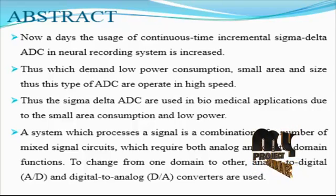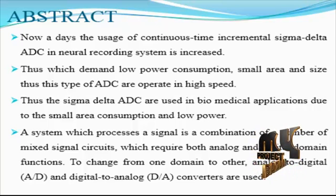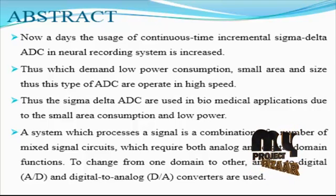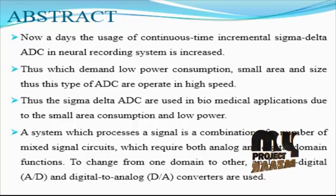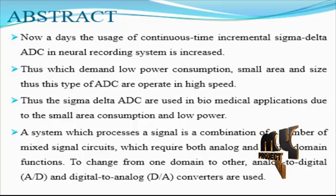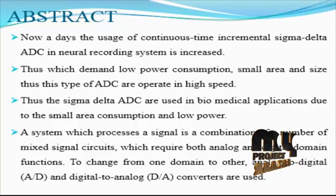A novel two-split capacitor array structure for successive approximation register analog-to-digital converter is proposed. When used for digital-to-analog conversion, the circuit reduces chip area and power consumption compared to conventional capacitor arrays, improving resolution. The area reduction becomes more significant with increasing ADC resolution. Capacitor mismatch and parasitic effects on the proposed structure are analyzed theoretically, and behavioral simulations demonstrate the effectiveness, showing good binary weighted elements for the overall architecture.